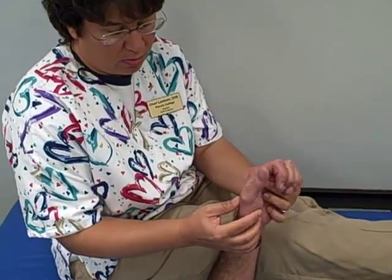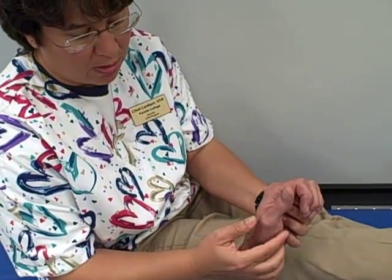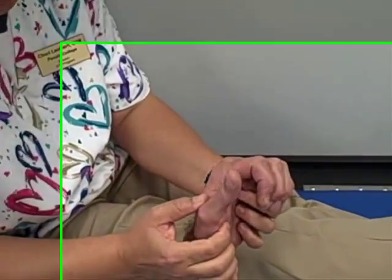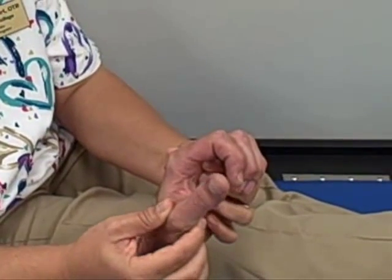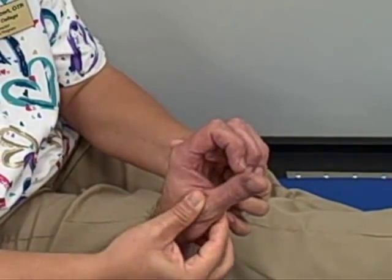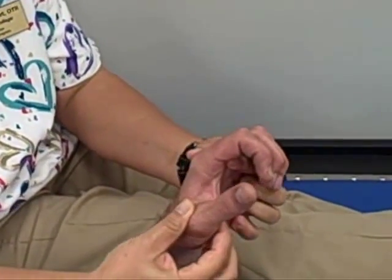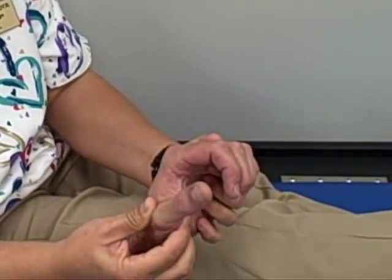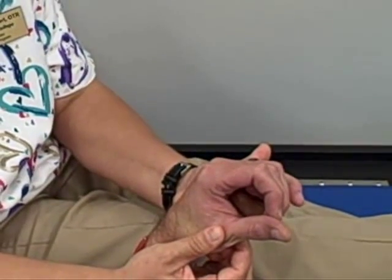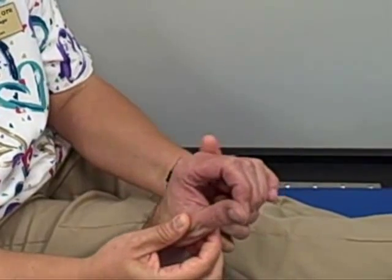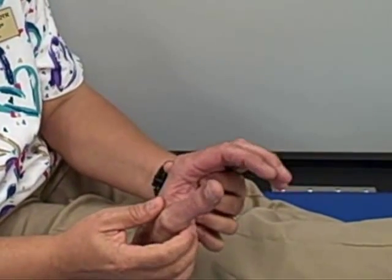So for the CMC joint, the options of movement we have are abduction, adduction, flexion, extension, and opposition. Those are our choices. We're going to do each one of those 10 times and we're going to keep it slow.